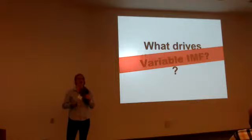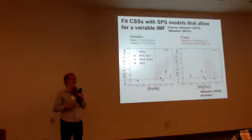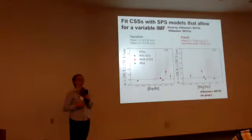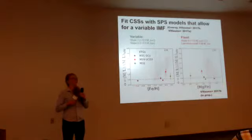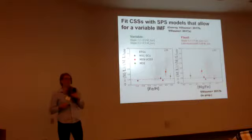This is what I and my collaborators have been working on: conducting a pilot study measuring the stellar mass-to-light ratios of these compact stellar systems using stellar population models that allow for a variable IMF. The models I used are an extension of Charlie Conroy's models. To be succinct, we fit a two-component power law IMF in these objects with the breakpoint at half a solar mass.